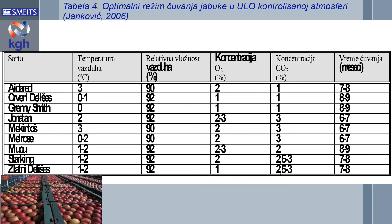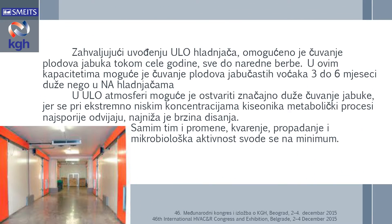Za različite sorte preporučene su i različite koncentracije kiseonika i ugljen-dioksida i različita dužina skladištenja. Zahvaljujući uvođenju ULO hladnjača, omogućeno je čuvanje plodova jabuka tokom cele godine, sve do naredne berbe. U ovim kapacitetima moguće je čuvanje plodova jabuke i do 3 do 6 meseci duže nego u normalnoj atmosferi, odnosno samo u hlađenim prostorima. U ULO atmosferi moguće je ostvariti značno duže čuvanje jabuke, jer se pri ekstremno niskim koncentracijama kiseonika metabolički procesi najsporije odvijaju i najniža je brzina disanja.